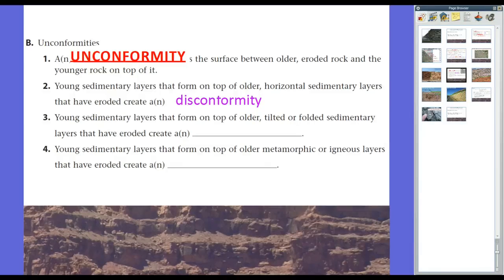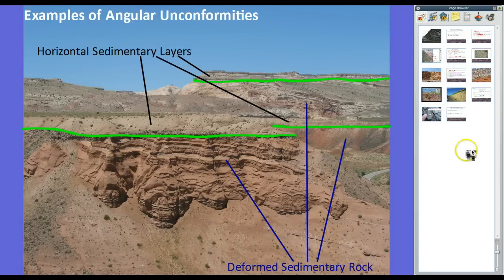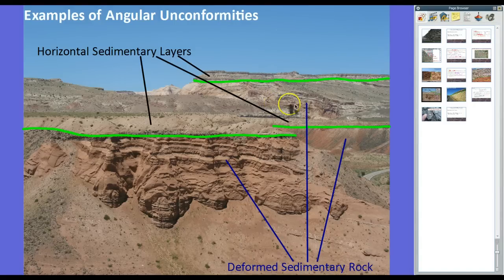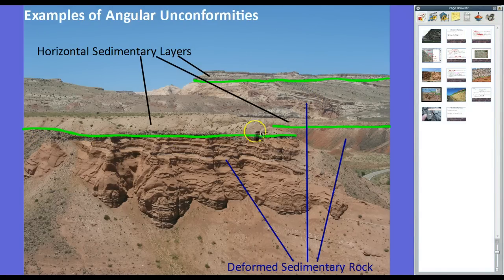When younger sedimentary layers form on top of older tilted or folded sedimentary layers that have eroded, it creates what we call an angular unconformity — these are easy to spot. Looking at a picture from out west: at the bottom we have deformed sedimentary rock where you can see individual sediment layers that have been angled and pushed down by geologic forces. There's an unconformity gap in the rock record, and on top of it are horizontal sedimentary layers lying on top. Obviously there were geologic forces that happened to the lower section that haven't affected the upper section.